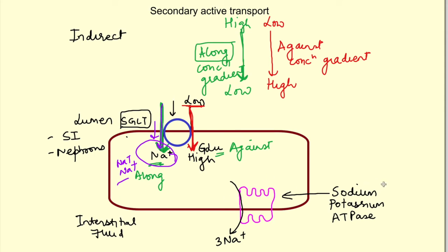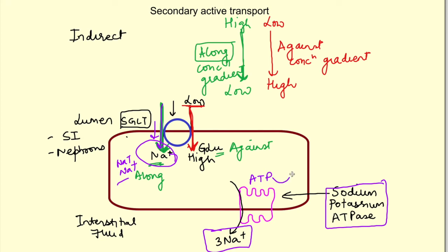So it is important to maintain the sodium gradient for this transporter to keep working. This is done by the primary active transporter — the sodium-potassium ATPase we spoke about earlier. By moving sodium ions out using ATP, it maintains the gradient for sodium ions and the secondary active transporter keeps working.